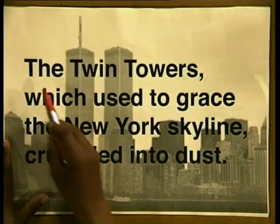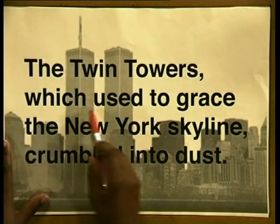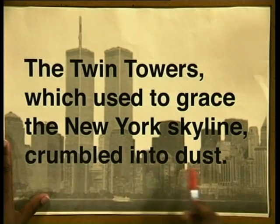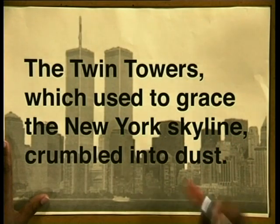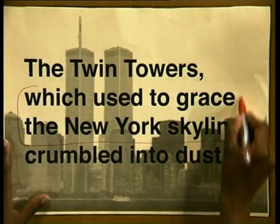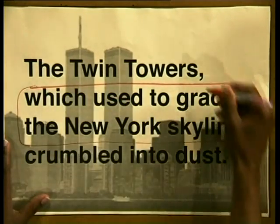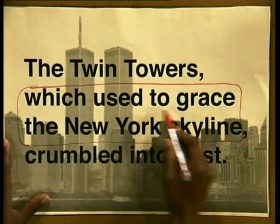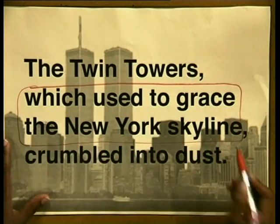Here's another example. See if you can spot the relative pronoun and the subordinate clause. The twin towers, which used to grace the New York skyline, crumbled into dust. Now, where's the subordinate clause in this sentence? It's in between the two commas, and it reads: 'which used to grace the New York skyline.'